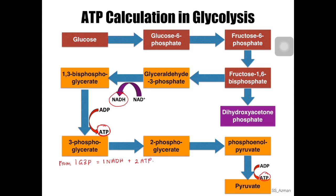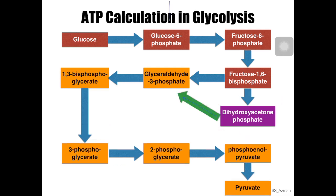We also have the dihydroxyacetone phosphate waiting to be converted into glyceraldehyde-3-phosphate, so it undergoes isomerization and is converted into the second glyceraldehyde-3-phosphate. The same process happens: glyceraldehyde-3-phosphate is oxidized, NAD+ is reduced into NADH, one molecule of ATP is produced in step 7, and another molecule of ATP is produced in the last step. So in total, from two glyceraldehyde-3-phosphate molecules, we process both through the same payoff phase reactions.